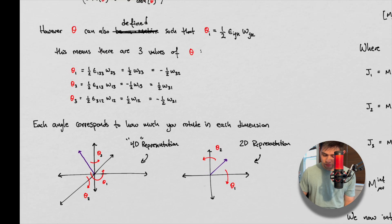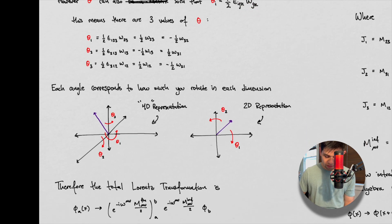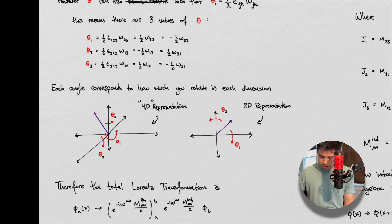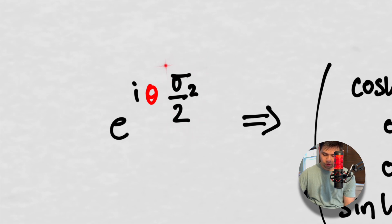Depending on what this equation looks like — how many entries there are — that'll tell us how many theta variables there are. In a 2D representation we might only have theta_1 and theta_2. Theta_1 is going to rotate us around one axis, and theta_2 is going to rotate us around another axis. So this is the matrix that's going to produce what looks like the rotation matrix, and this is the argument that's going to be inside the arguments in that matrix.